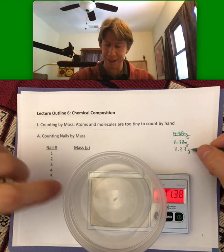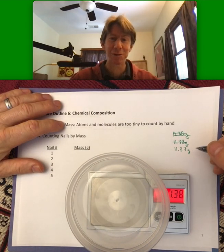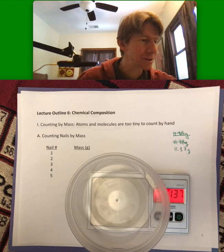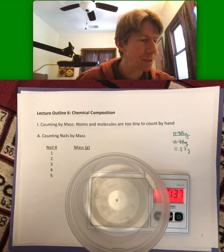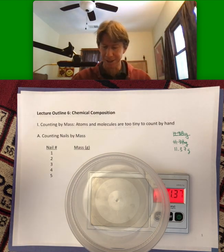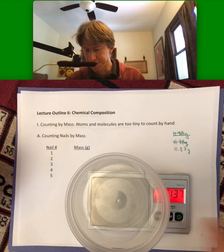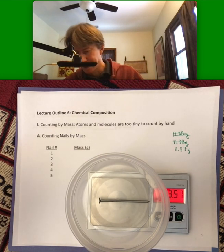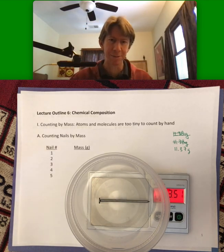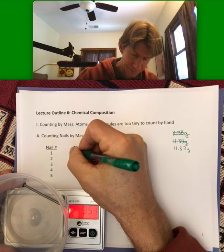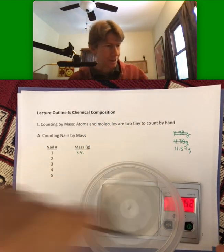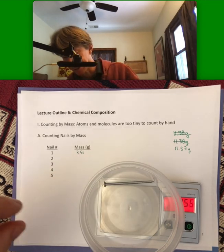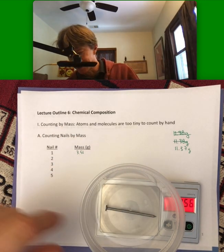I write down the mass of the dish because sometimes my scale turns off and I want to make sure I know what's going on. I've got some nails — these are two-and-a-half inch by 0.113 inch exterior galvanized nails. I'm just going to weigh one, and this nail is three point five one grams. Please write that down. One difference between nails and atoms is that atoms of the same kind all weigh the same, but these nails will be a little different.